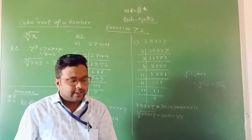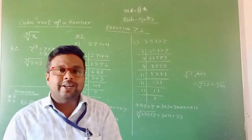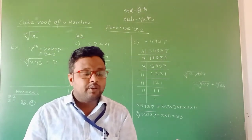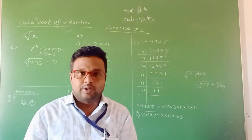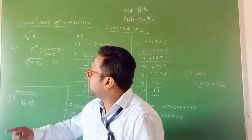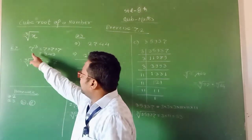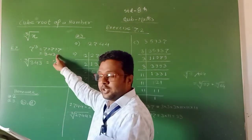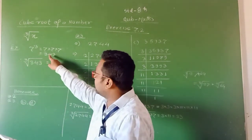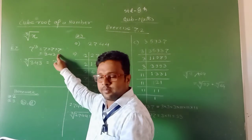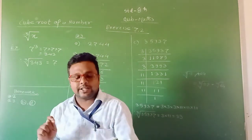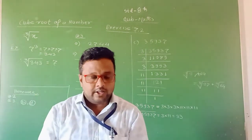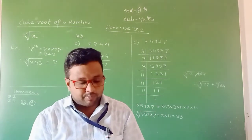Statement J: The cube of a one-digit number can be a three-digit number. If you take the cube of 7, their cube is 343, which is a three-digit number. It is possible. Therefore, this statement is also true. In this way, we complete question number one.